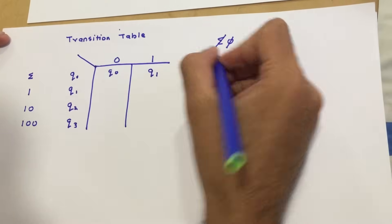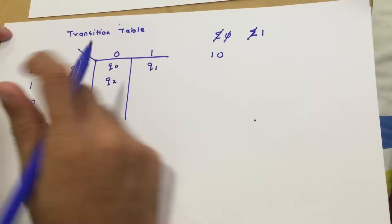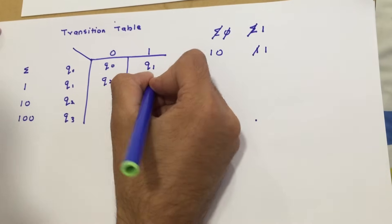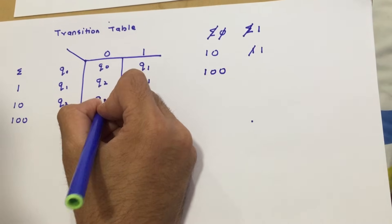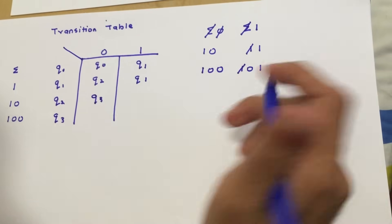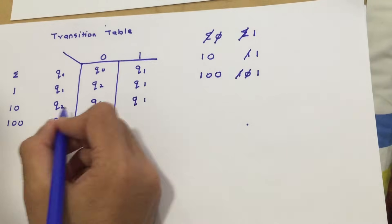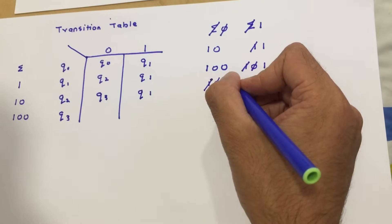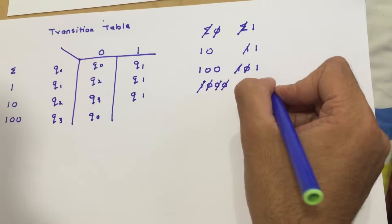For q1 on input 0: '1'+'0' gives '10' — present, so q1 on 0 goes to q2. For q1 on input 1: '1'+'1' gives '11' — not present, cut to '1' which is present, so q1 on 1 goes to q1. For q2 on input 0: '10'+'0' gives '100' — present, so q2 on 0 goes to q3. For q2 on input 1: '10'+'1' gives '101' — not present, cut to '1', which is present, so q2 on 1 goes to q1. For q3 on input 0: '100'+'0' — not found at any level, so q3 on 0 goes to q0. For q3 on input 1: eventually reduces to '1', so q3 on 1 goes to q1.